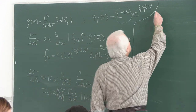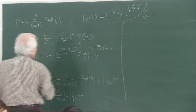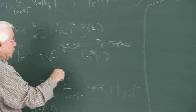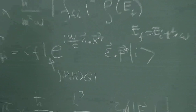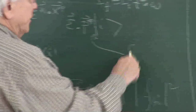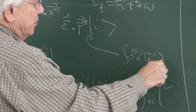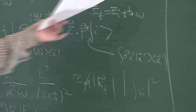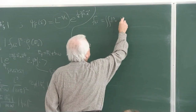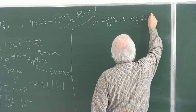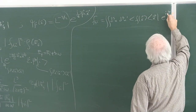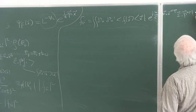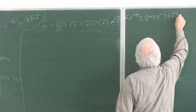I write this expression by inserting completeness relations — that is, identities. The first is d-cube-x times ket-x bra-x, and I insert another completeness relation with a different dummy index. These are position eigenvectors, therefore they are complete. Once we insert them, the amplitude becomes a double integral: d-cube-x d-cube-x-prime, bra-f ket-x, times x times e to the i omega over c n dot x, times bra-x times epsilon dot p operator times ket-x-prime, times bra-x-prime ket-i.